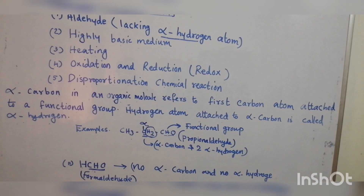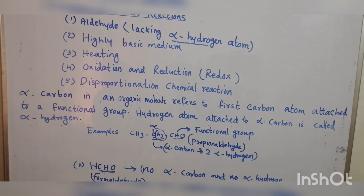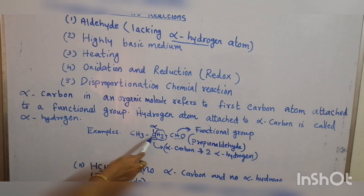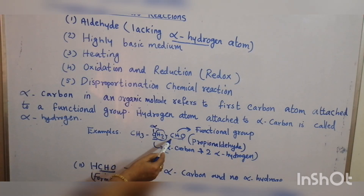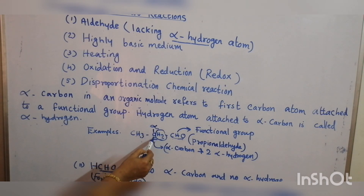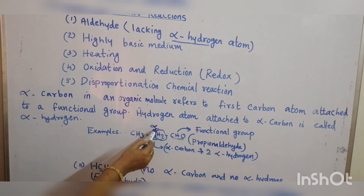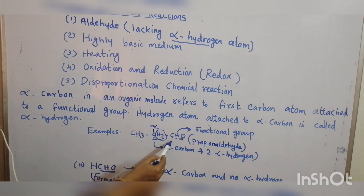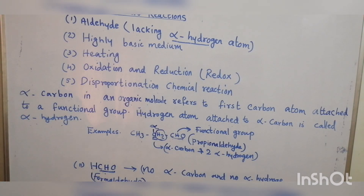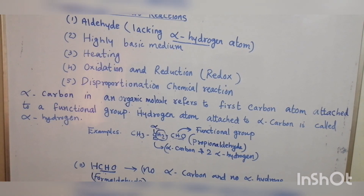Take the case of propionaldehyde: CH3-CH2-CHO. CHO is the functional group. CHO is bonded to CH2, and that carbon is the alpha-carbon. There are two hydrogen atoms connected to the alpha-carbon. So propionaldehyde has an alpha-carbon and two alpha-hydrogen atoms.